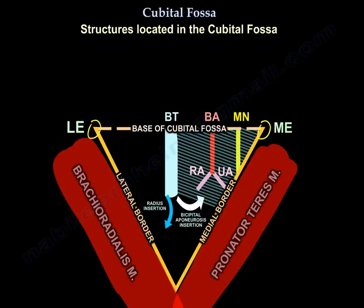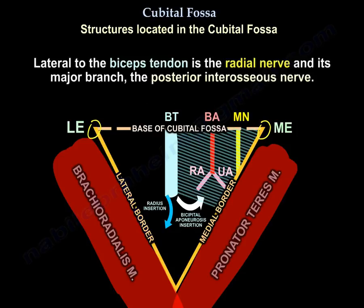Finally, lateral to the biceps tendon is the radial nerve and its major branch, the posterior interosseous nerve.